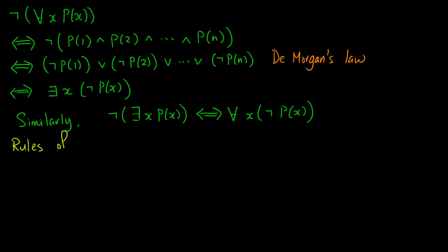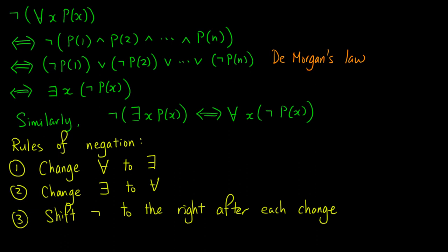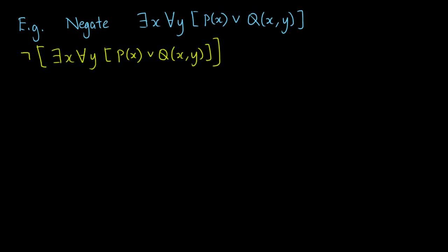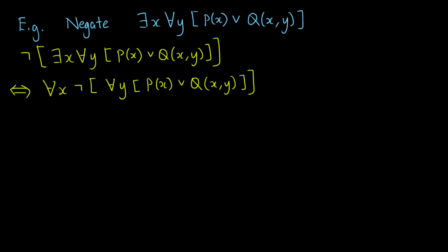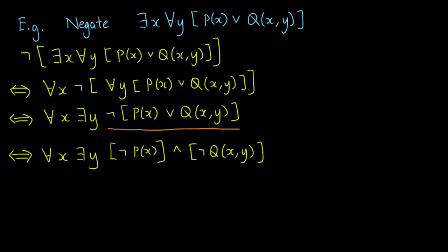So we have the following rules of negation: whenever we see 'for all,' we change it to 'there is'; whenever we see 'there is,' we change it to 'for all.' After each change, we shift the negation to the right and negate smaller predicates. Let's try to negate a statement as an example. First, we see a 'there is,' so we change it to 'for all' and shift the negation to the right. Then we have a 'for all' right after the negation, so we change it to 'there is' and further move the negation to the right. Then we have 'not (P or Q),' so we apply De Morgan's law to rewrite it as 'not P and not Q.' So the required negation is: for all x, there is y such that not P and not Q.